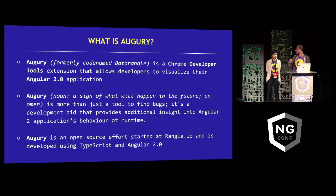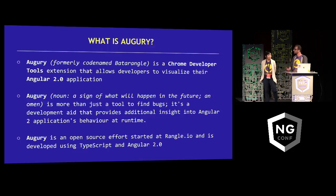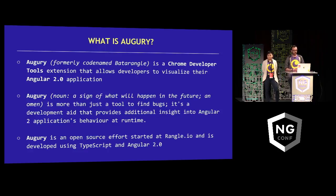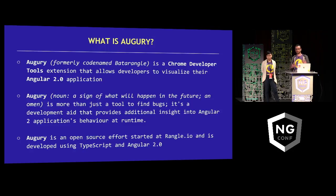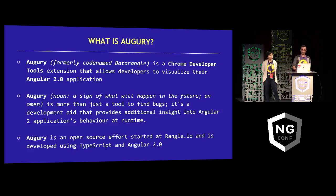So, first of all, what is Augury? You might have heard about Augury before. We were formerly codenamed BadRangle. Augury is a Chrome Developer Tools extension that allows you to visualize your Angular 2 application at runtime. We think of Augury as more than just a tool to find bugs, but more as an aid that gives you additional insight into your application's behavior at runtime. Augury is an open source effort that we started at Rangle.io, and it's written using TypeScript and Angular 2.